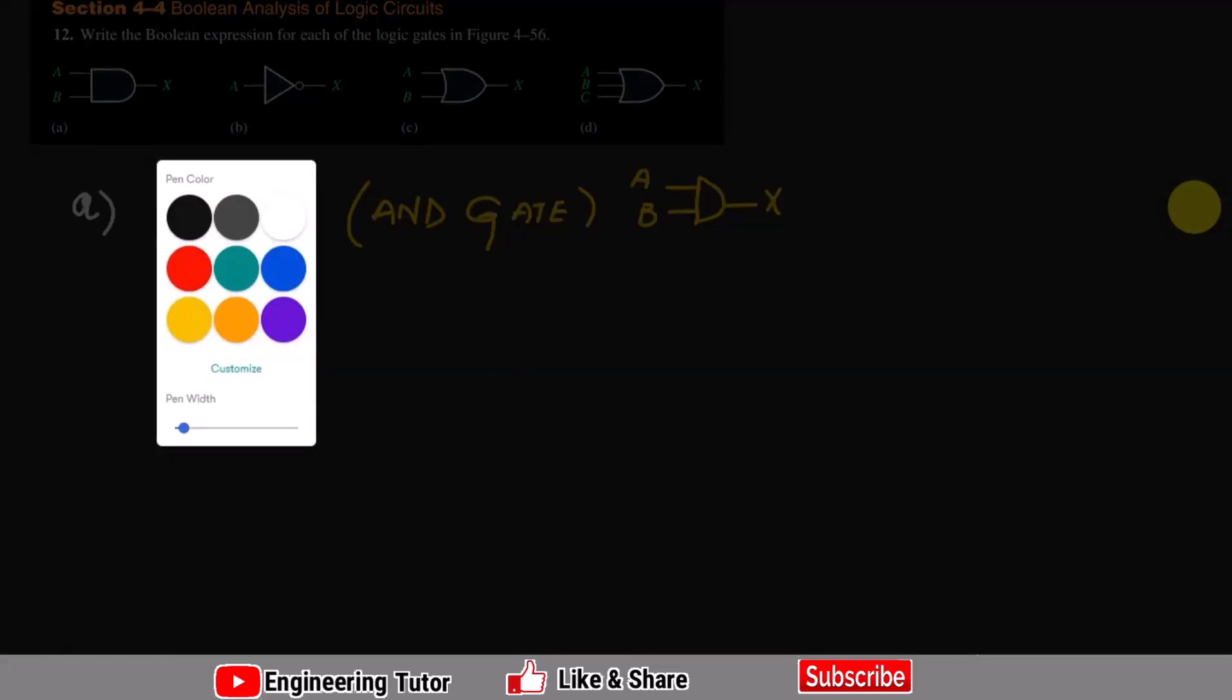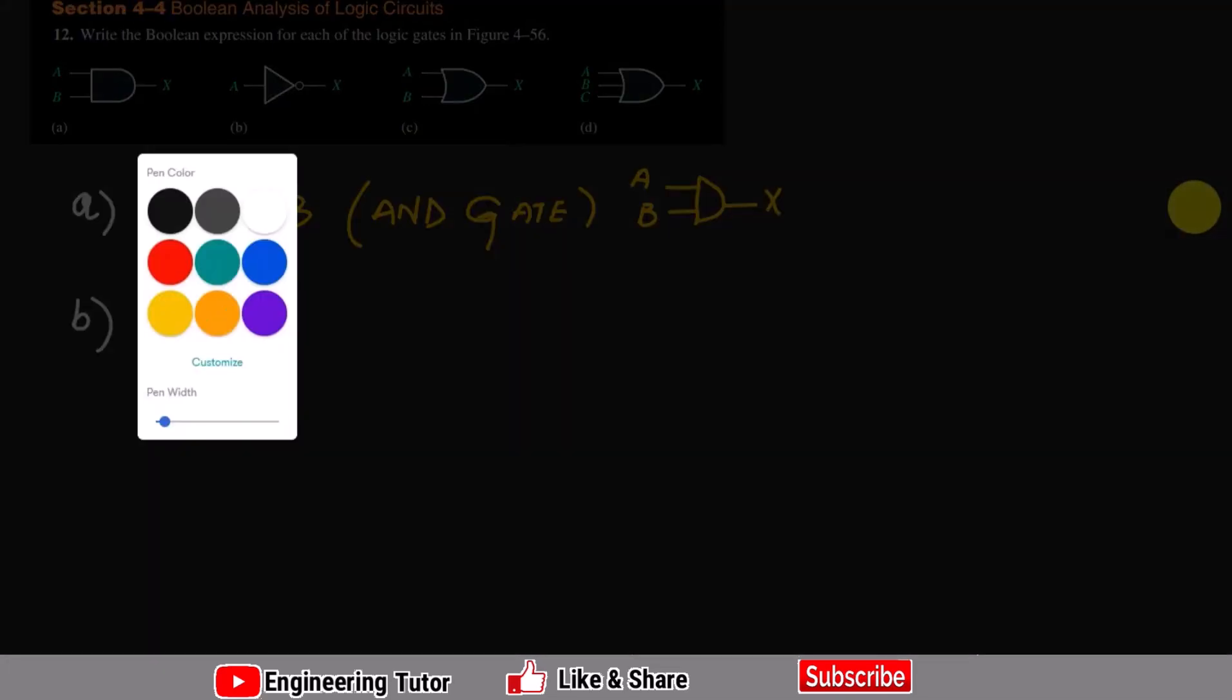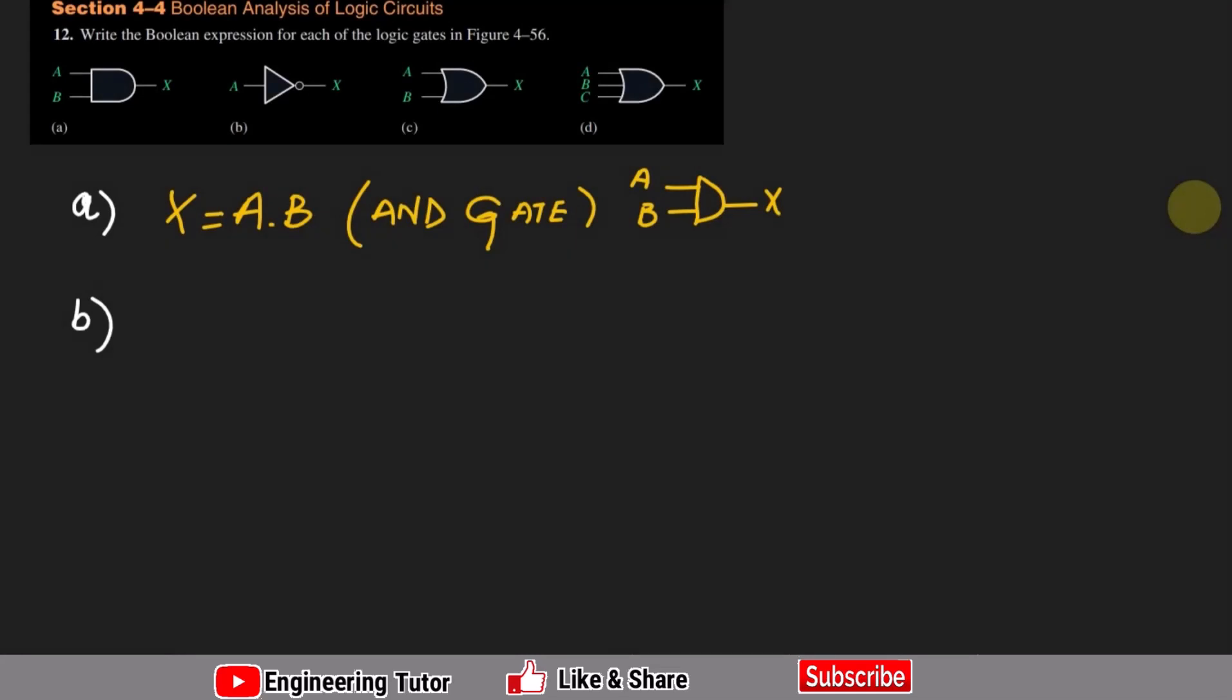Similarly for part B, here we have this circuit. For part B we can see that we have one input, one output, and here we have this bubble. So therefore X is the complement of A and that is basically the NOT gate.